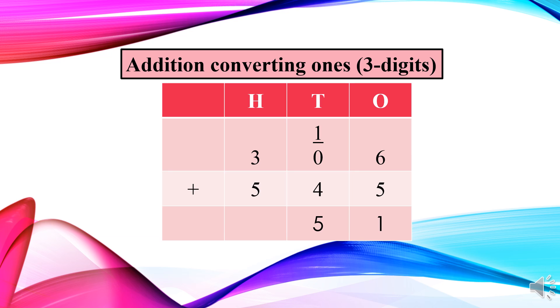Now we have to move to hundreds place. At hundreds place, we have three hundreds and five hundreds. So, when we have the sign of addition, we have to add both numbers. After adding, we will get what? Eight, very nice. We will get eight. So, the answer will be eight hundred and fifty one.